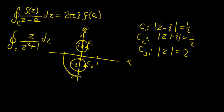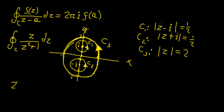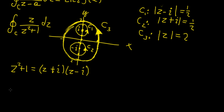Now that we have those three curves, what can we infer using Cauchy's integral formula? The formula requires the integrand to be expressed in the form f(z)/(z - a). We know that z² + 1 factors as (z + i)(z - i), so we can rewrite the integral as ∮ z / [(z + i)(z - i)] dz.